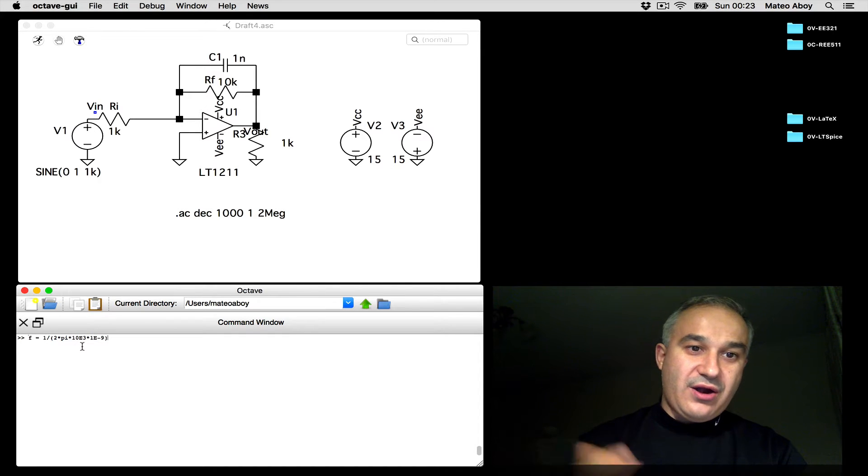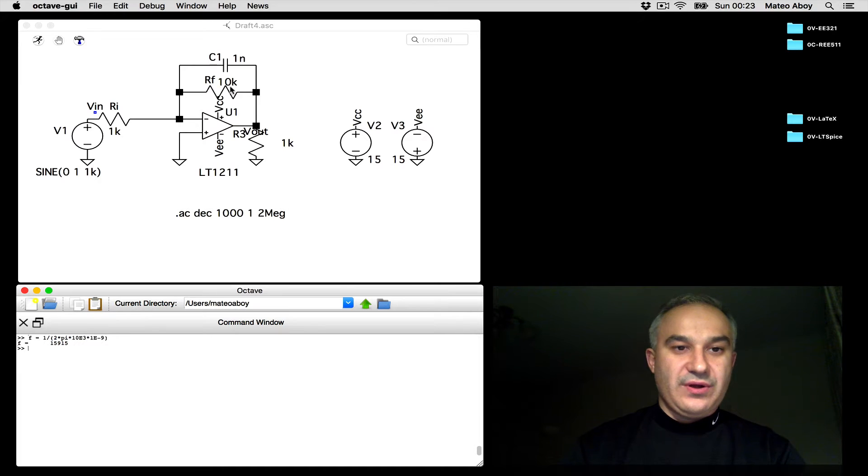We have 1 over 2π, R, the feedback resistor, C. And so we see that this is around 15 kHz. Let's go ahead and simulate it.